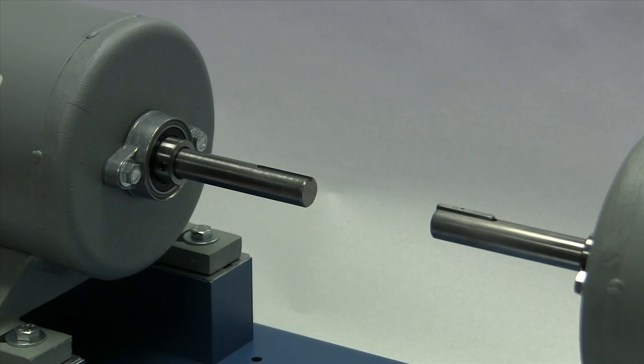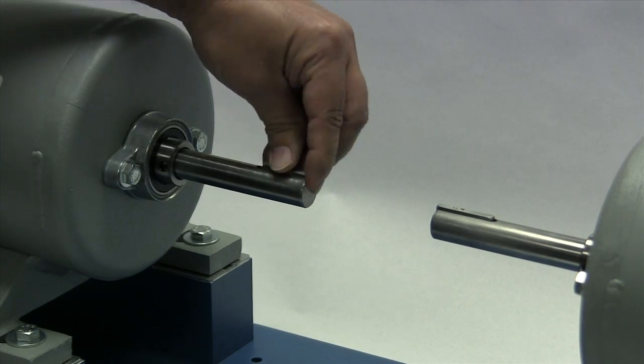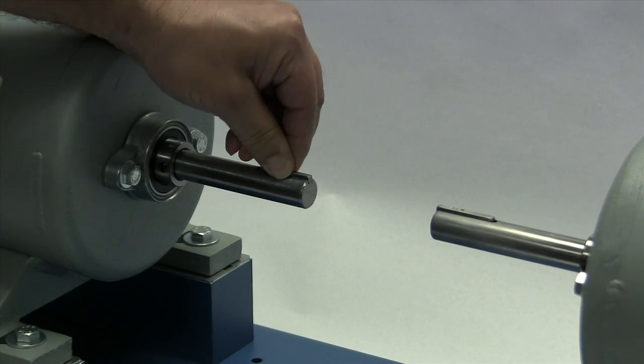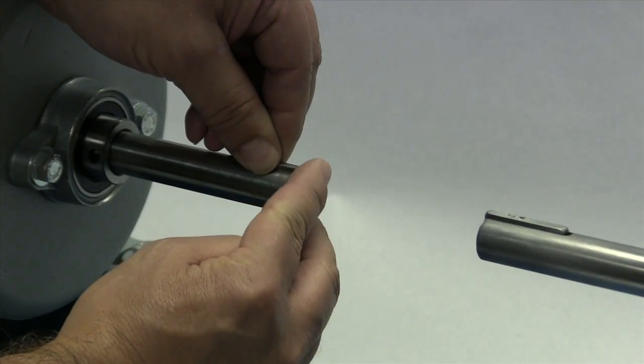Before installing the hub, place the key in the keyway on the shaft. The key should fit snugly into the keyway with no side-to-side movement. The end of the key should line up with both the end of the shaft and the hub.